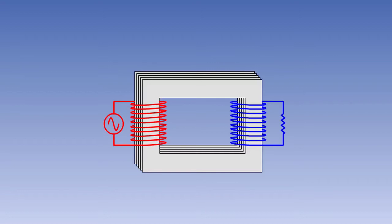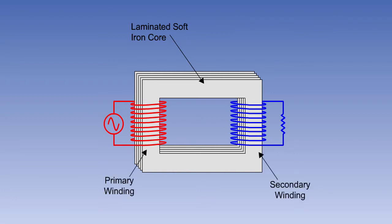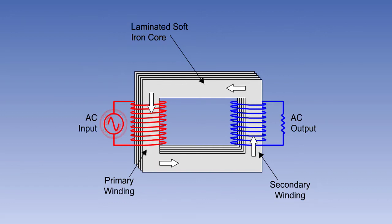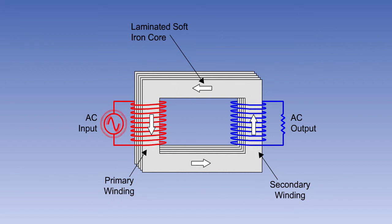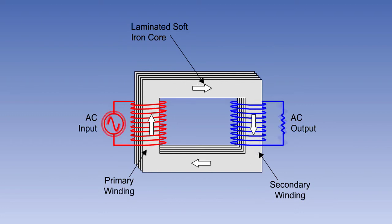A simple transformer consists of two electrically separate coils of wire wound around two opposite sides of a laminated soft iron core. The coils are known as the primary and the secondary windings. The primary winding is connected to an AC supply, and the output is taken from the secondary winding. The alternating voltage and current in the primary winding creates an alternating flux, which flows through the core and cuts through the coils of the secondary winding, inducing an EMF in the secondary winding, which is available as the output AC voltage.